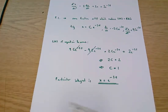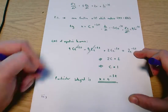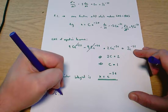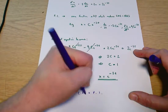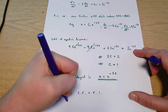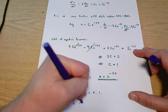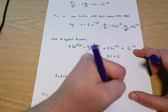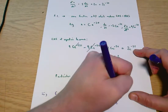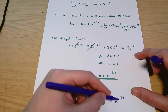The question then says write down the general solution — that's now straightforward. The general solution is the complementary function plus the particular integral: x equals ae to the minus 2t plus be to the minus t plus e to the minus 3t.